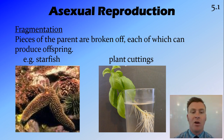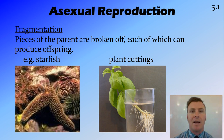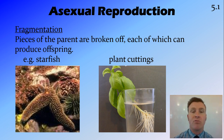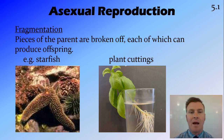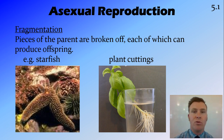Fragmentation can occur in animals such as starfish, as well as in plants such as taking a cutting. We don't often think of this as asexual reproduction in plants, but with some plants you can take a cutting and grow it, and it will actually produce roots and create a whole other organism.